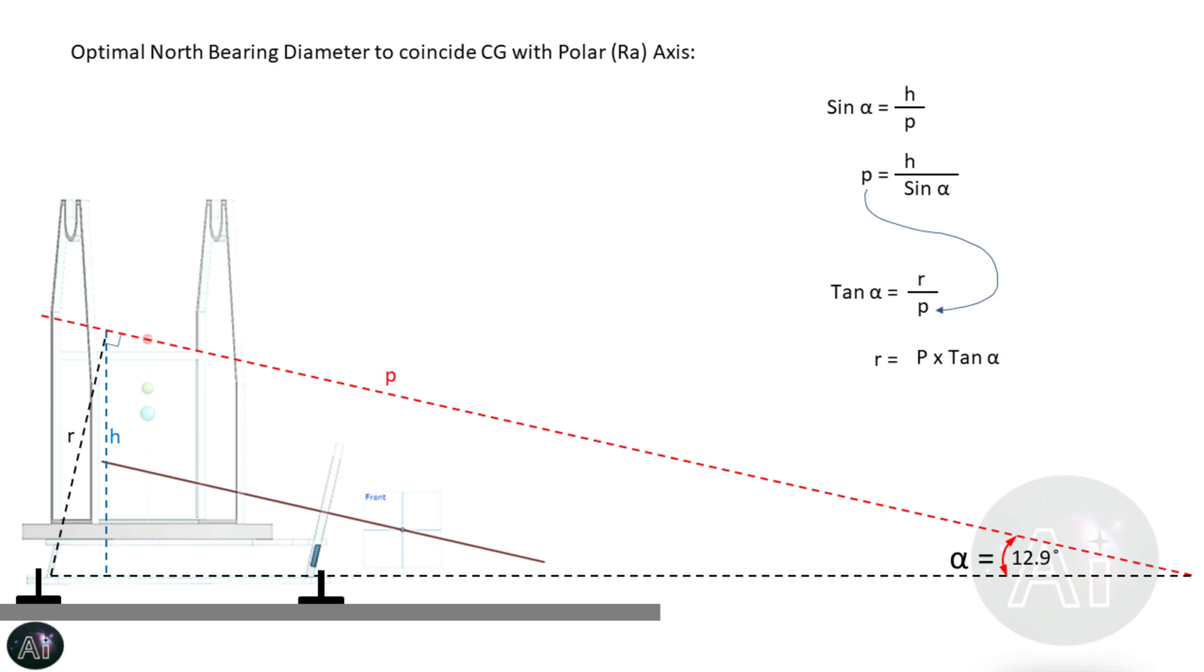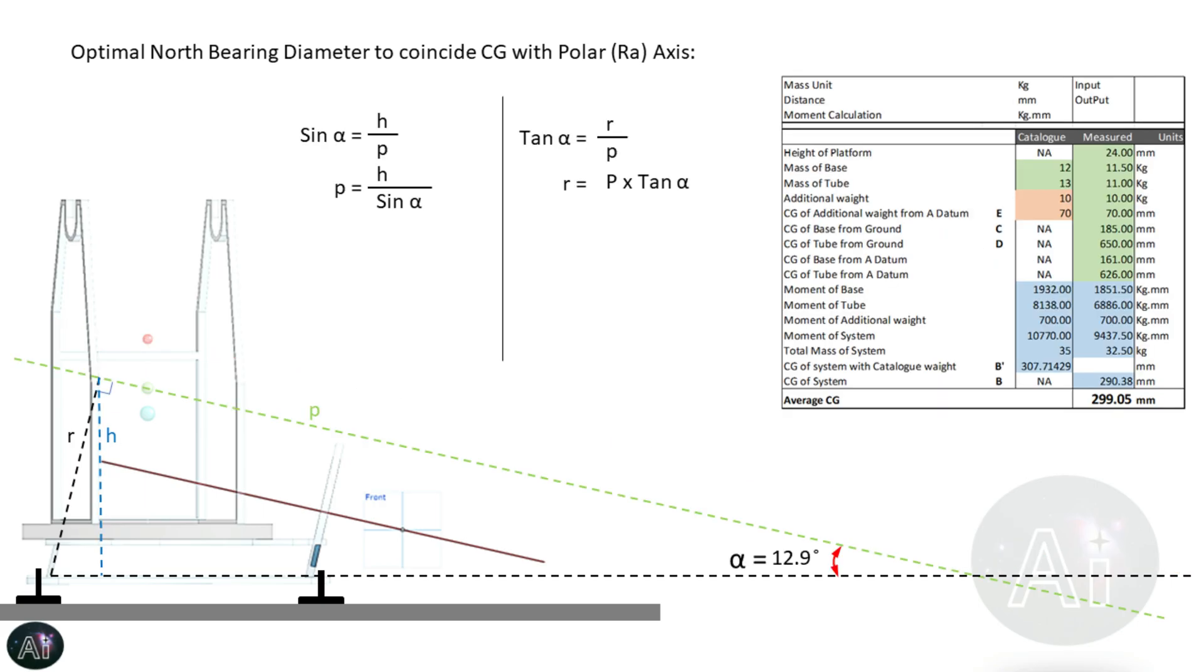Now let's substitute the value that we have calculated in episode 2 for my 8-inch GSO Dobsonian telescope. After substituting them we get a value of P as 1791.713 millimeters. Now for ease of calculation let's round it off to 1792 millimeters.